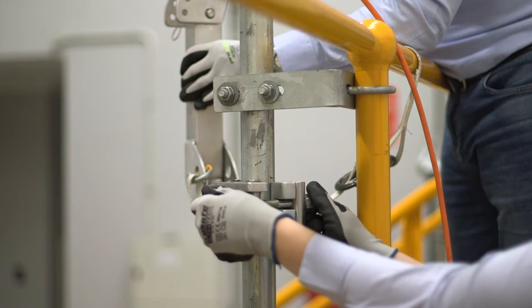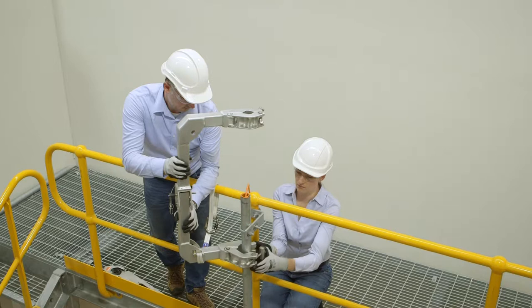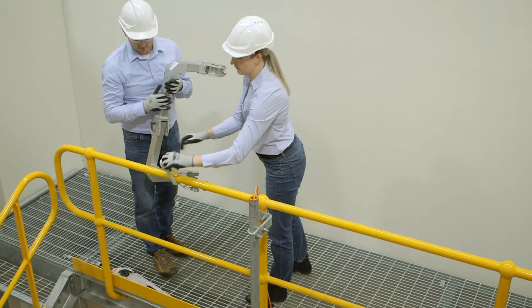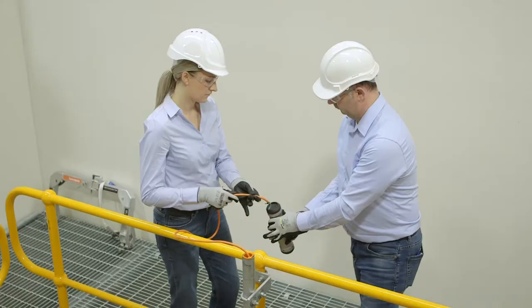Loosen bottom clamp and remove pole conversion tool. Remove lanyard from handrail.